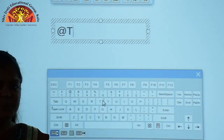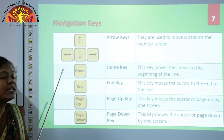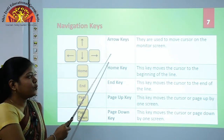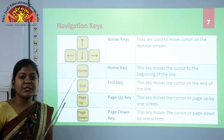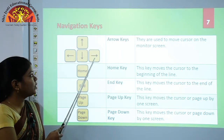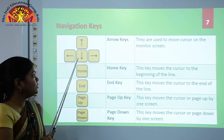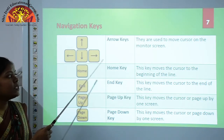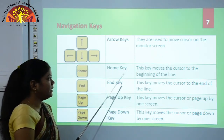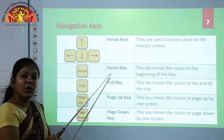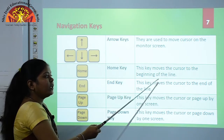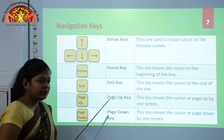Our next special keys are navigation keys. The first navigation key is the arrow keys. A keyboard has four arrow keys: left, right, up, and down. These arrow keys are used to move the cursor on the monitor screen. The next navigation key is the Home key, which moves the cursor to the beginning of the line.